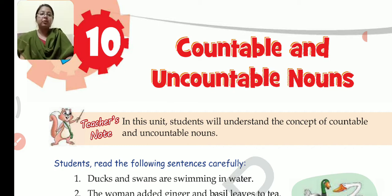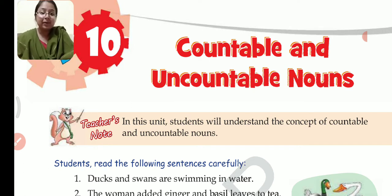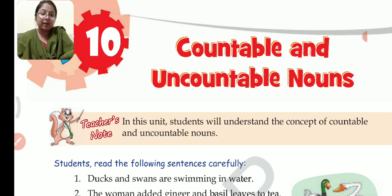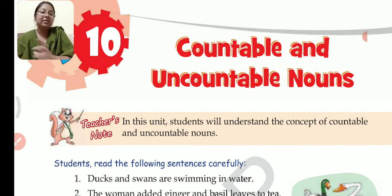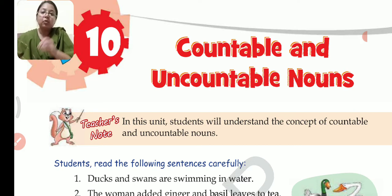Let me give you examples of countable nouns. Book — book is countable. Pen — pen is countable, you can count pen. Laptop — can you count laptop? Of course you can. Laptop is countable. Cell phone is countable. TV is countable. Pencil is countable. So whatever you can count refers to countable nouns.